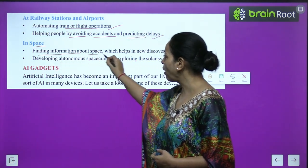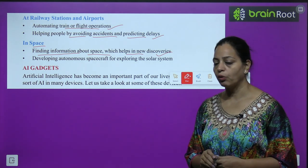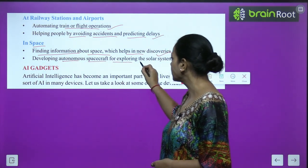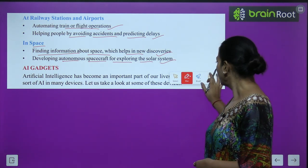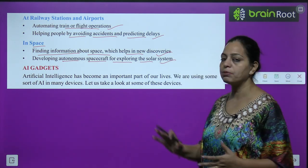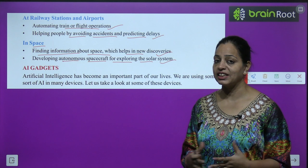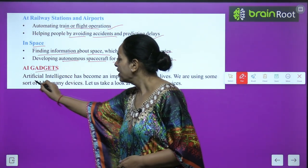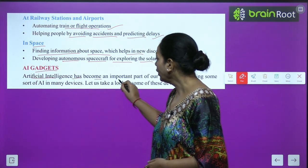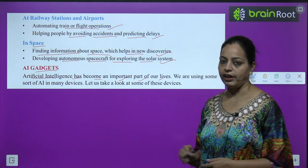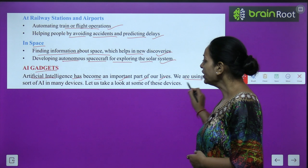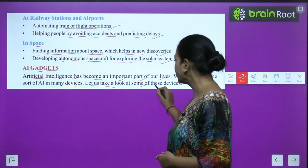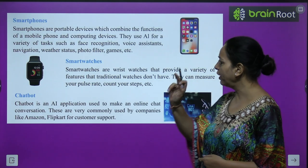In space, AI helps in finding information about space which aids in new discoveries, and in developing autonomous spacecraft for exploring the solar system. AI has become an important part of our life and we are using it in many devices. Let us take a look at some of these devices.